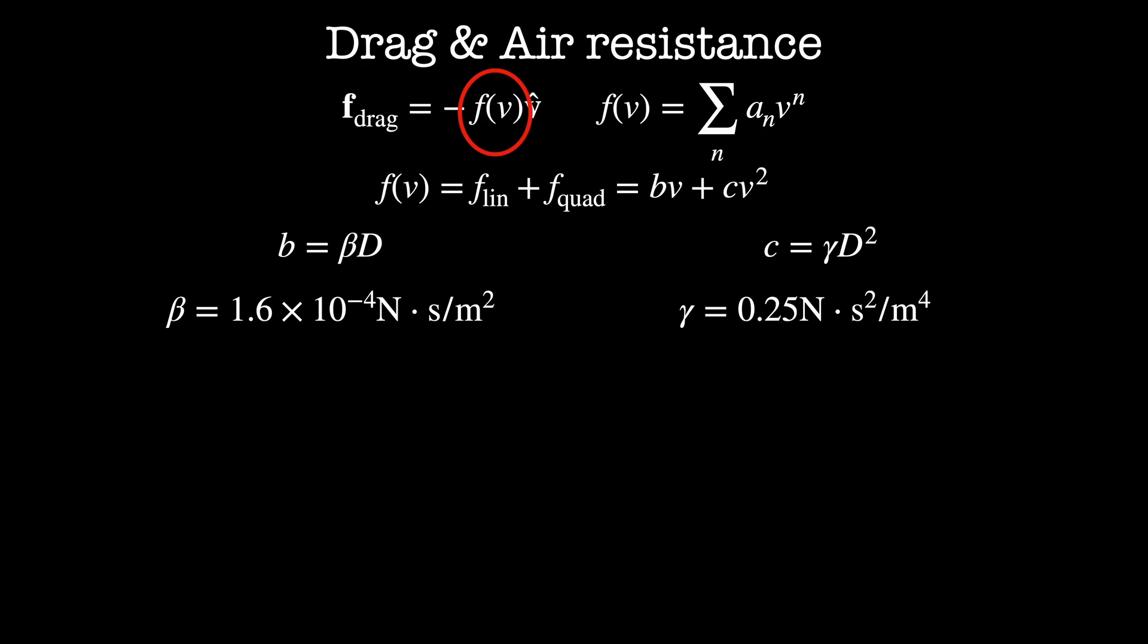So how do we know if our particular system is dominated by linear air resistance, quadratic air resistance, or both? We can do this by looking at the ratio between the two terms. F-quadratic divided by F-linear is equal to 1.6 times 10 to the third seconds per meter squared times the diameter of the object times its velocity. Thus, if this dimensionless quantity is very small, linear drag dominates, and vice versa.